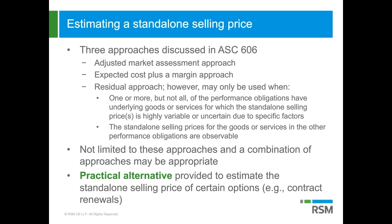There are three approaches discussed in the ASU on how to estimate a standalone selling price. The first is the adjusted market assessment approach. This approach focuses on the amount that the entity thinks it can get for the good or service in the market where they're going to sell it. For example, the company might look to competitor pricing for similar goods and services and then adjust those prices to reflect the company's costs and margins. This approach is easiest to use when the company has sold the goods or services for a respectable period of time or when a competitor is selling similar goods or services, but it's not as easy to apply for an entirely new good or service.